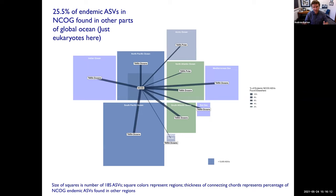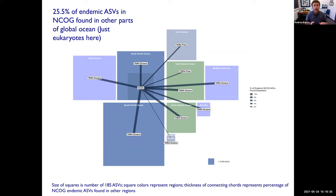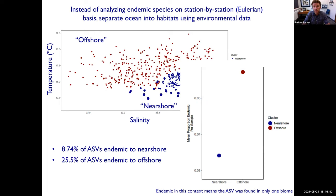That is not to say that some of those endemic species in this region aren't found somewhere else. We compared this back to the Tara Oceans data and found about 25% of those regional endemics from NCOG are found somewhere else on Earth in Tara. So some of those endemics are probably not found anywhere else on Earth, but some of them are. We hope and think that this pattern of a nearshore-offshore gradient is robust and is a very interesting one.